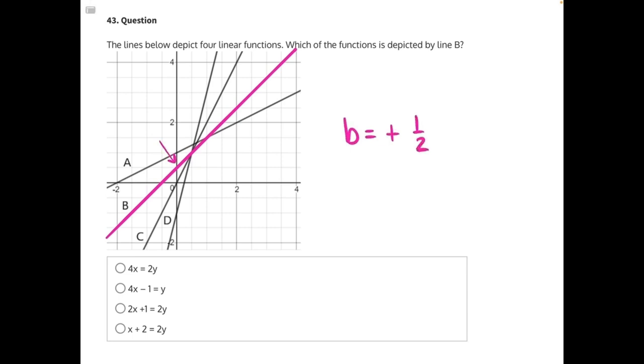And its slope is ascending from left to right in the positive direction, which means our slope needs to be positive. So what we should be looking for when eliminating answer choices is a positive slope and positive one-half as our b value.